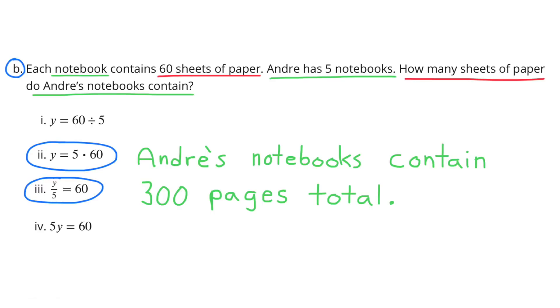Problem B: Each notebook contains 60 sheets of paper. Andre has 5 notebooks. How many sheets of paper do Andre's notebooks contain? I selected equation 2, y equals 5 times 60, and equation 3, y over 5 equals 60, or y divided by 5 equals 60. Andre's notebooks contain 300 pages total.